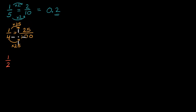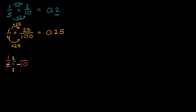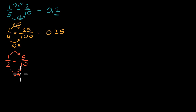So 1/4 is equal to 25 hundredths, which we represent in decimal notation as 0.25 — which we could also think of as 2 tenths and 5 hundredths. Now let's do 1/2. Well, 10 is a multiple of 2, so we can think about this in terms of tenths. To go from 2 to 10 we multiply by 5, so multiply the numerator by 5 as well. So 1/2 is equal to 5 tenths, which as a decimal is 0.5.